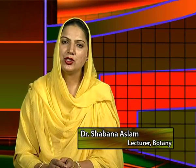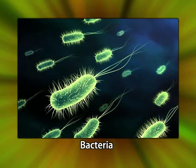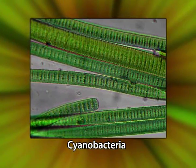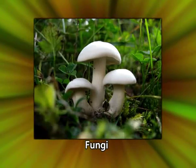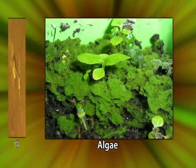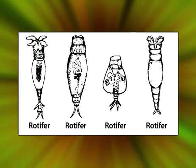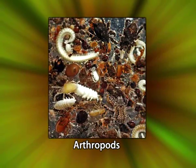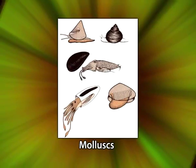Soil is a complex mixture of mineral particles, organic matter, water and air. In addition, soil also has a biological component comprising of flora and fauna. These include bacteria, cyanobacteria, fungi, algae, protozoa, rotifers, arthropods, mollusks and a host of other organisms.